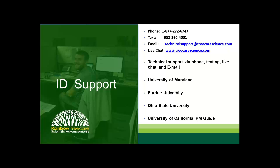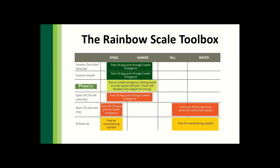Transitioning to the toolbox of how to actually manage these insects — we call it the Rainbow Scale Toolbox. We have several different tools available: soil or bark spray applied systemic options, a trunk injected option, a crawler stage spray, and dormant oil as well. Each of these may be part of your management protocol.